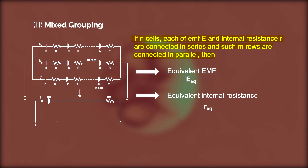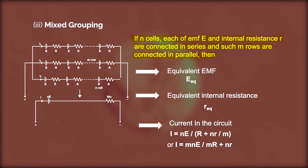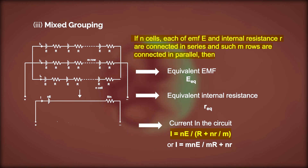In series, one row has total resistance Nr. Since there are M rows in parallel, the total equivalent internal resistance = Nr/M. The total current in the circuit is then I = MNE divided by (MR + Nr), combining the external resistance R with the equivalent internal resistance Nr/M.